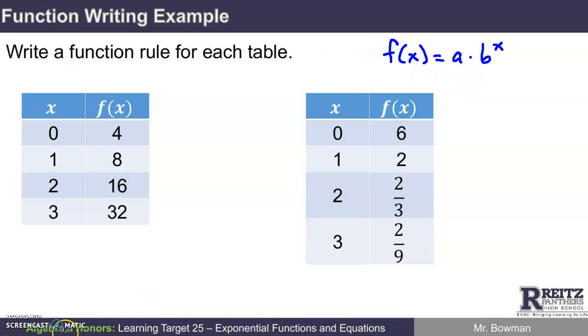Now a is f of zero. The reason I can show you that it's f of zero is that if you let x be zero, b to the zero power, since b is not zero, is one. So you'll just get f of zero to be a. In this first example, that tells me that a is four, because when x is zero, f of zero is four.